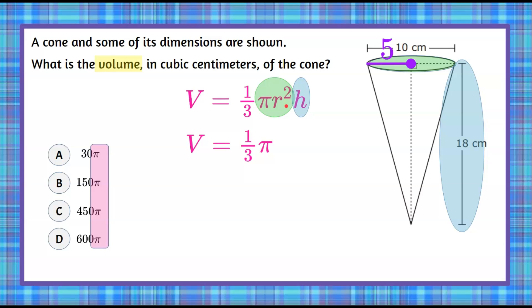So we're going to say r squared is 5 squared and our height h is 18. So now we have all the values that we need. Now we need to evaluate this expression to find the volume.